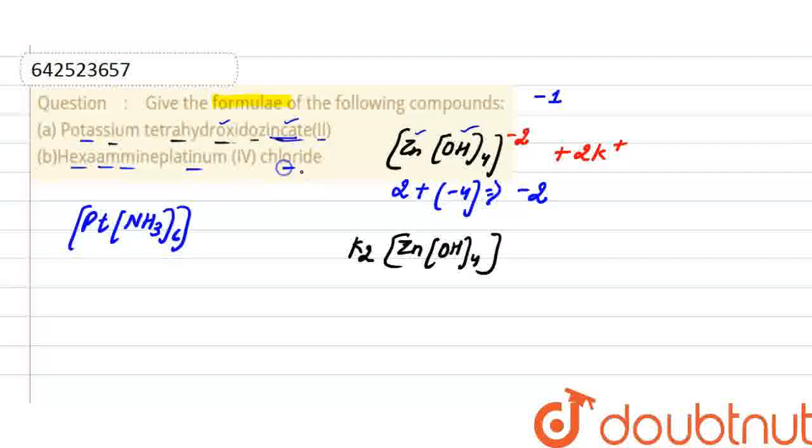Here the counter ion is chlorine. And how to find out how many counter ions are there? So we will just simply add the oxidation state. So the oxidation state of platinum here is +4. And NH3 is a neutral ligand.